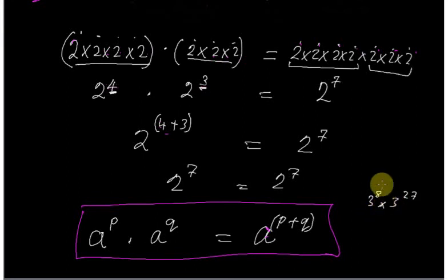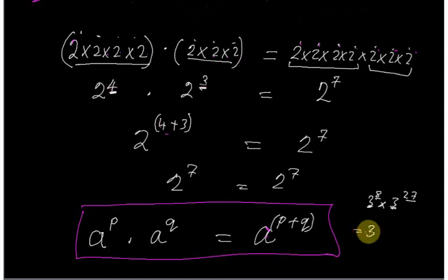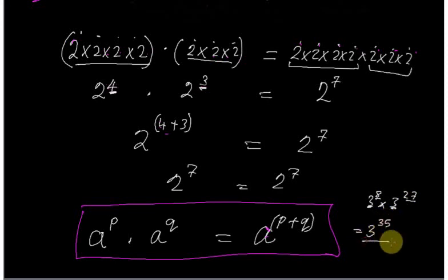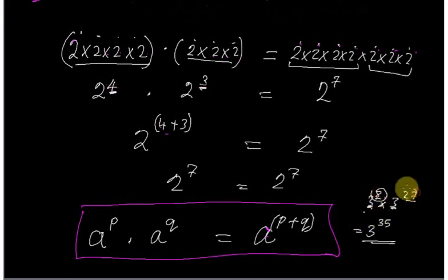For example, if you have three to the power eight times three to the power 27, you don't need to write the threes out. Just add the exponents, as long as the bases are the same: three to the power eight plus 27, which is three to the power 35. The base 'a' stands for three, and P and Q are the different exponents.